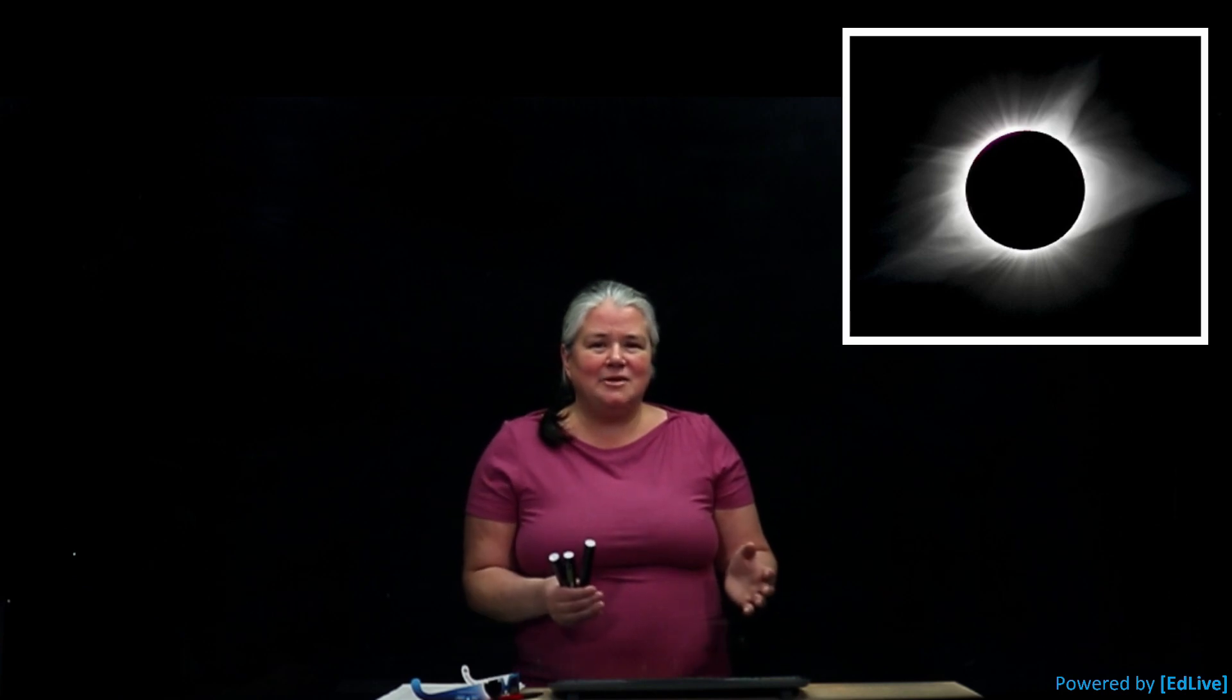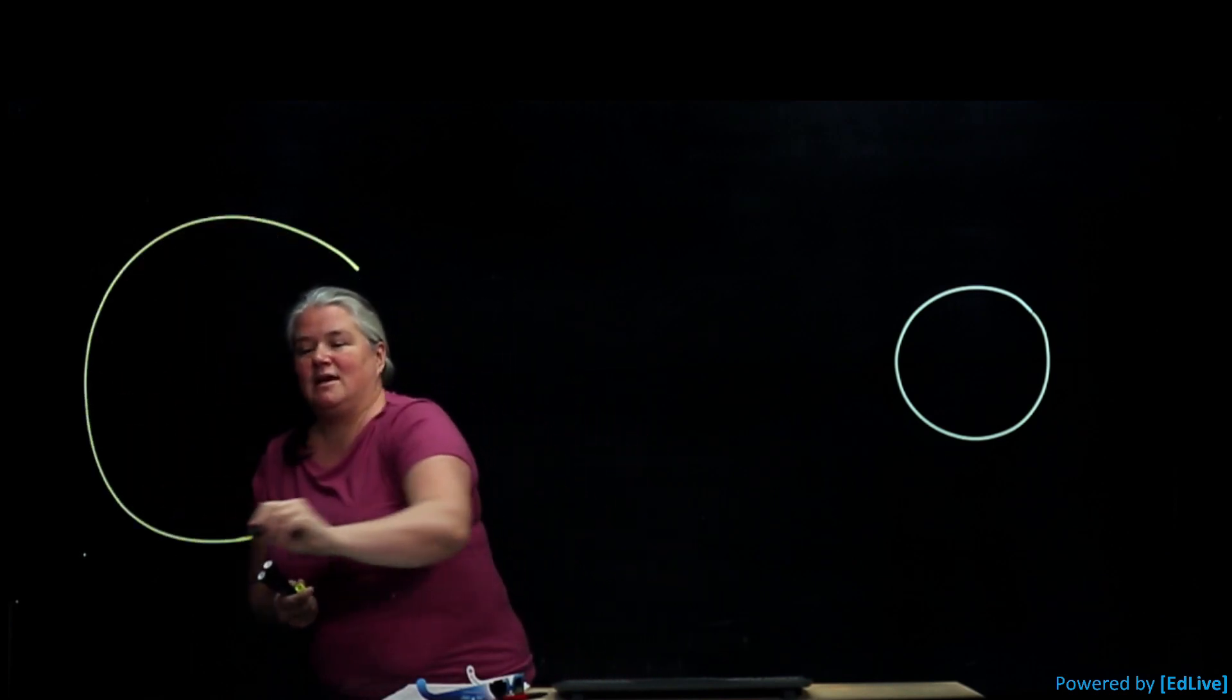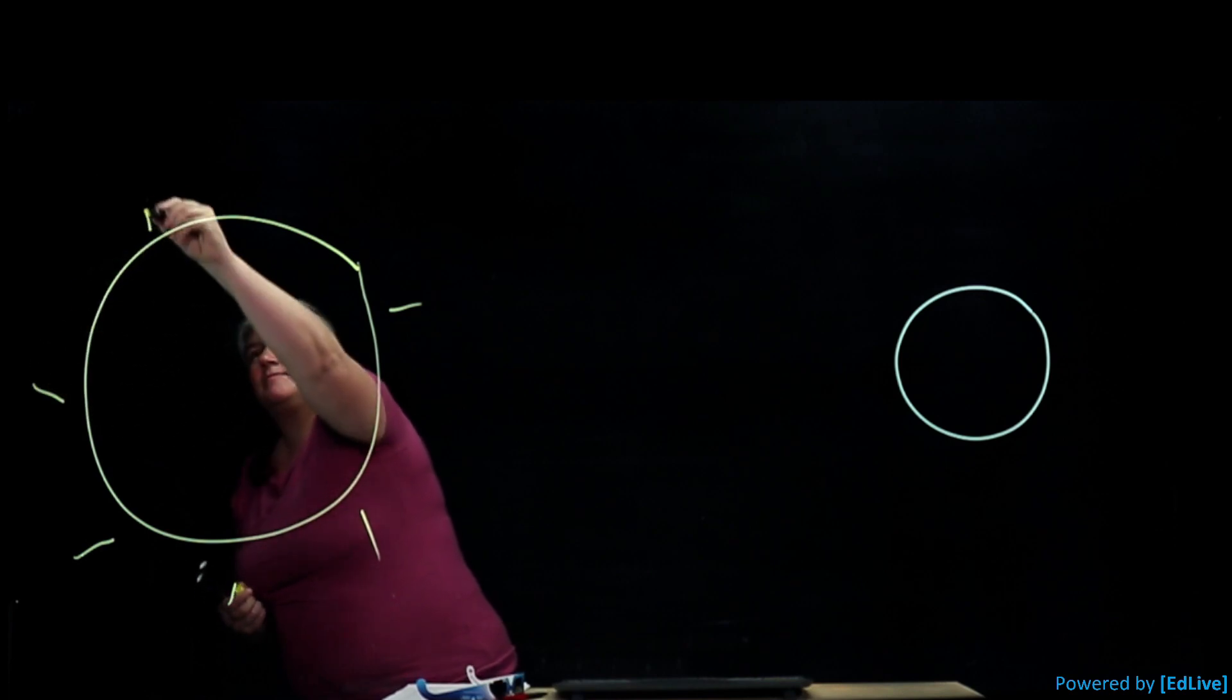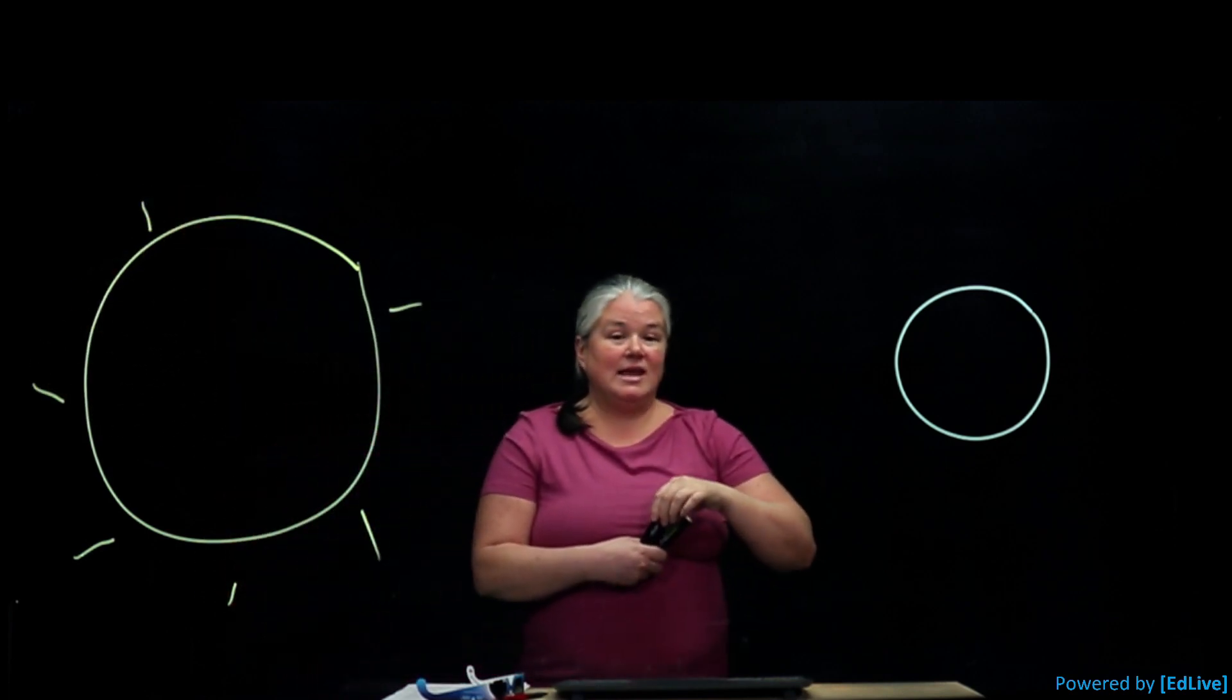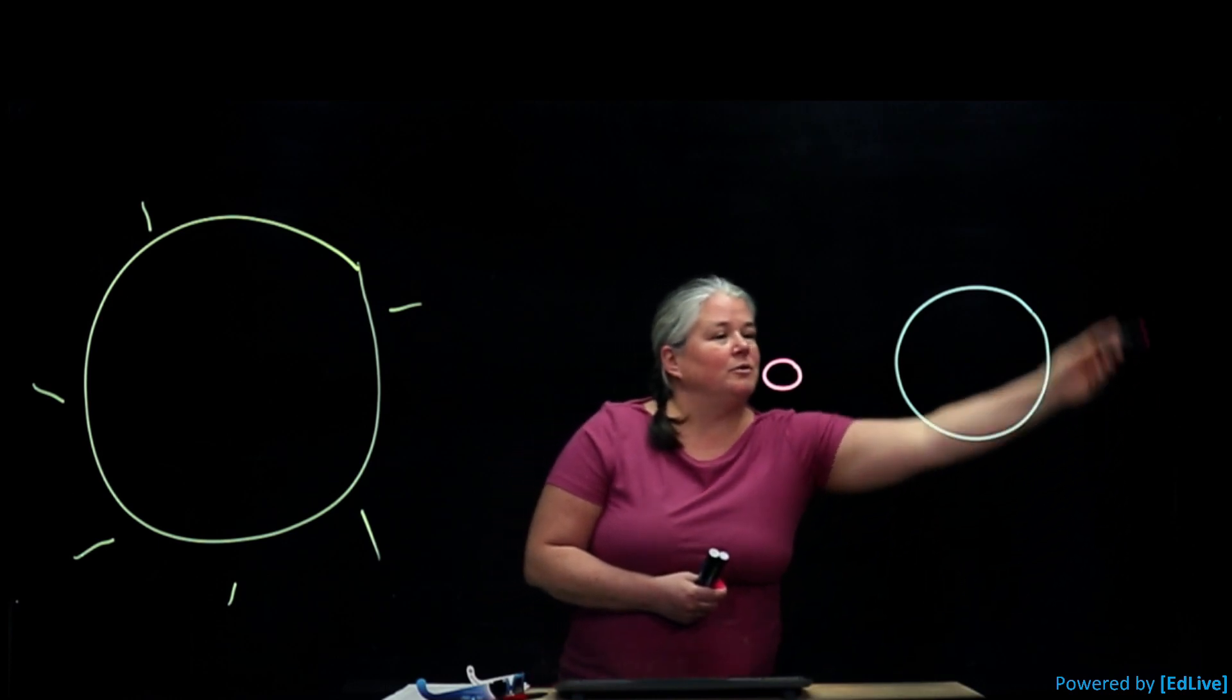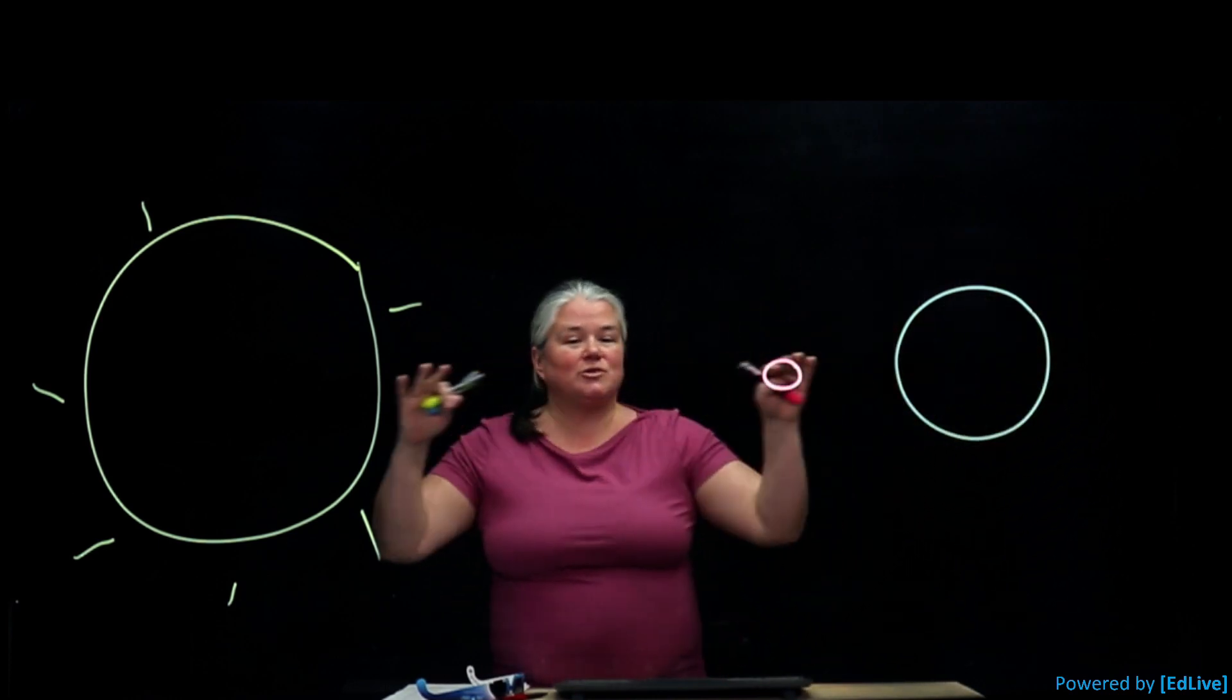But what is a solar eclipse anyway? Well, we live here on the Earth and the Earth goes around the Sun in one year. Next to us we have the Moon and the Moon goes around the Earth once a month roughly. A solar eclipse happens when the alignment is just right.